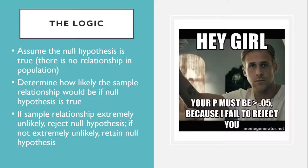The steps are as follows. First, assume for a moment that the null hypothesis is true — there is no relationship between the variables in the population. Then, determine how likely the sample relationship would be if the null hypothesis were true. Finally, if the sample relationship would be extremely unlikely, then reject the null hypothesis in favor of the alternative hypothesis. If it would not be extremely unlikely, then retain the null hypothesis.